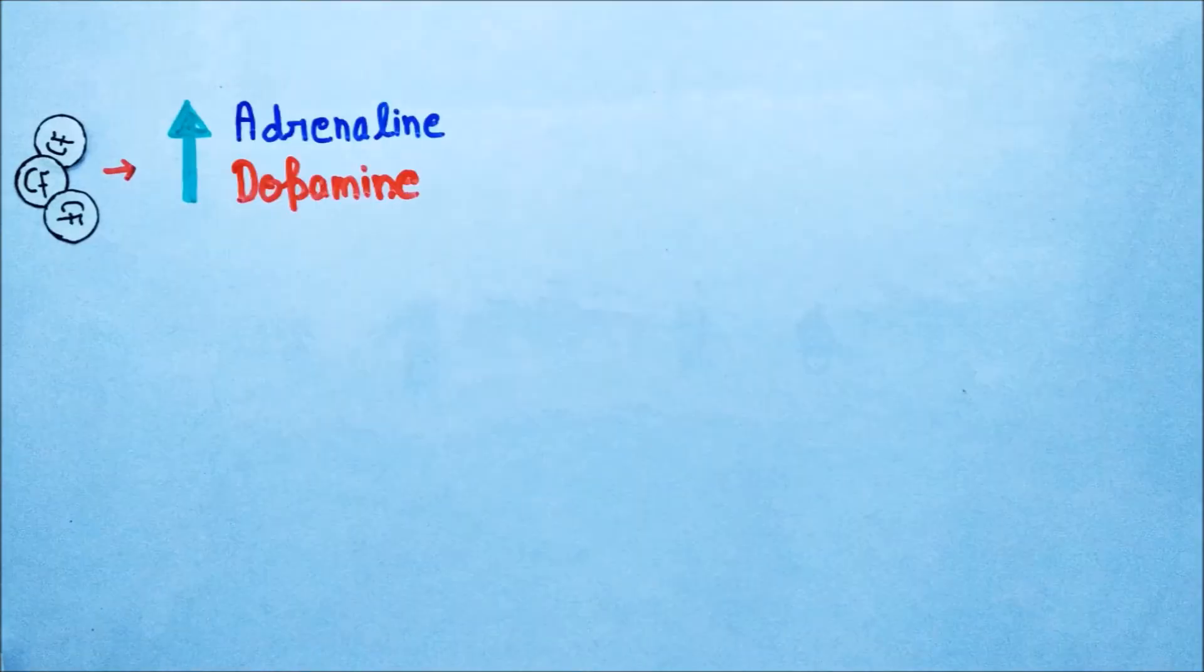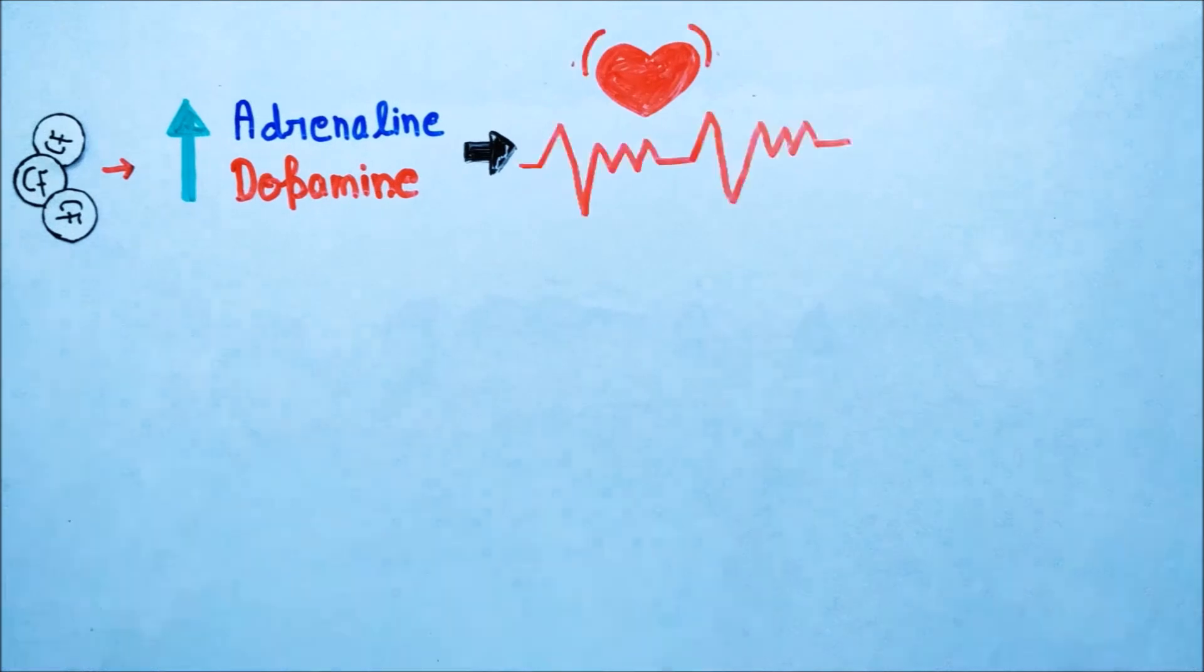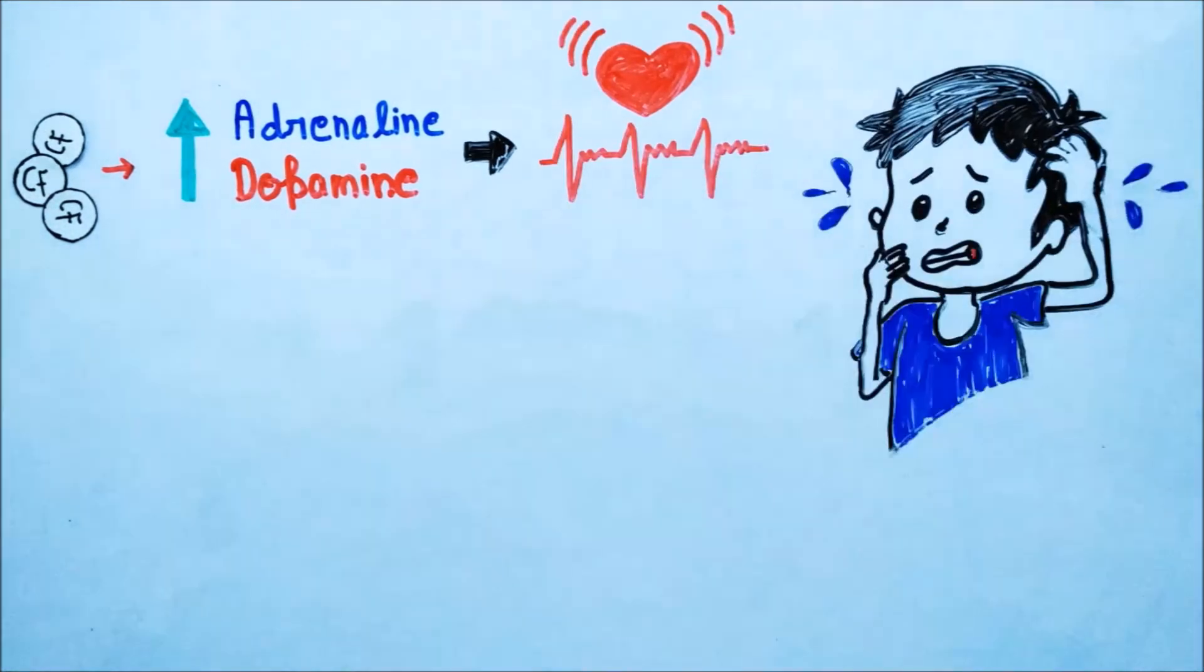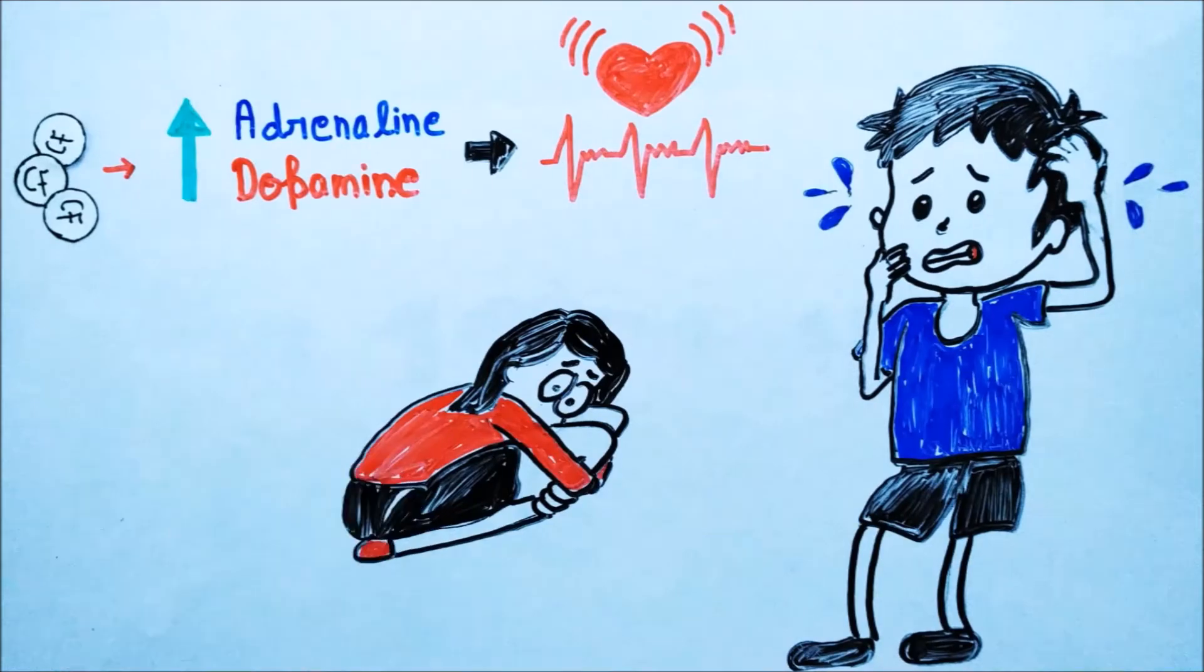Caffeine increases the release of adrenaline and dopamine, which makes heart beat faster, can make them hyperactive, nervous, and anxious.